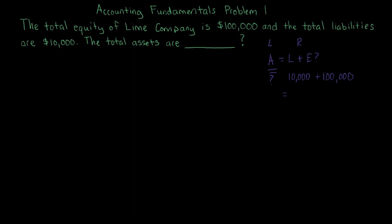That's the accounting equation—the main focus, the most important formula out there to help you understand accounting. So always remember that. Here, just to get the assets, we're going to add the $10,000 of liabilities plus the $100,000 of equity. We're going to get $110,000.